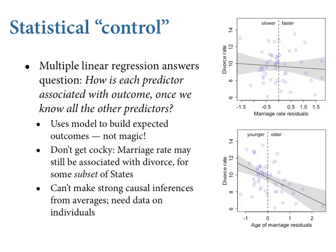Always remember: linear multiple regression answers the question of how each predictor is associated with the outcome once we know all the other predictors. You do have to be careful — this is still conditional on the model. Is this really linear? I doubt there's a linear relationship between these things. In fact, one of the things I like about this example is that it's easy to do model criticism. There's demography involved — why not start with the demographer's equation, a stock-and-flow model of marriages?